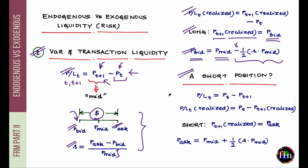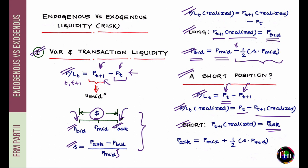For a short position, the P&L is the price at which you sold the borrowed asset today minus the price at which you bought it back. The realized P_(T+1) is the ask price at the end of the horizon, because in the quote system you will be hitting the ask price — you are buying and the market maker is selling.